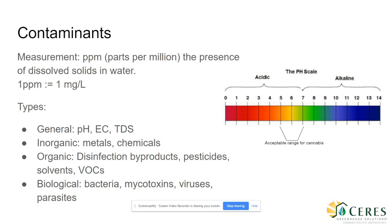The main concern with high levels of hardness is the scaling that will occur on the exposed infrastructure. It is also important to consider these concentrations of minerals in the development of your nutrient recipe. Chemicals, which are often found in municipal water for disinfection purposes, can build up in the soil and create browning, yellowing, or scorched-looking leaves that will eventually fall off completely. Disinfection byproducts, pesticides, solvents, and volatile organic compounds are all organic contaminants that exist in our waterways that can have unknown effects on plant health.